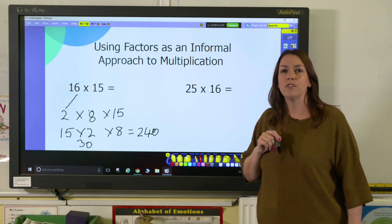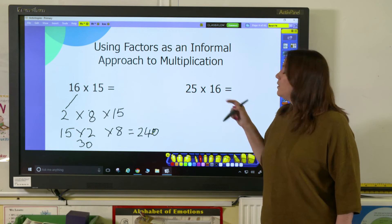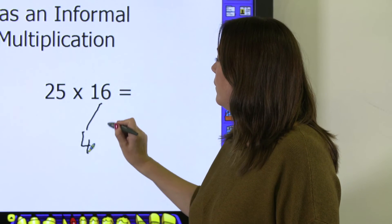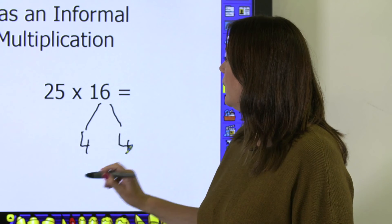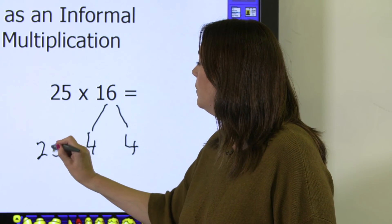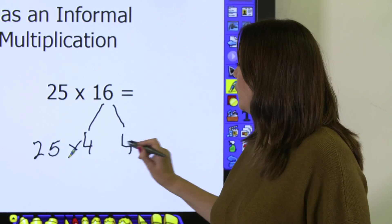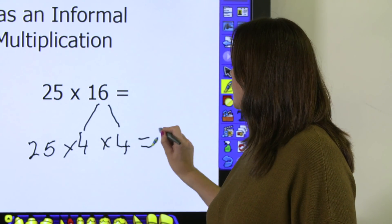Let's have a look at another one. 25 times 16. Well we know that the factors of 16 are 4 and 4. 25 times 4 is 100. And 100 times 4 is 400.